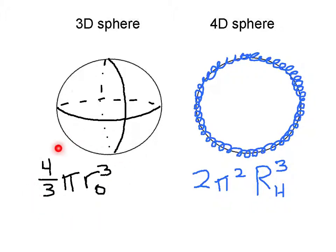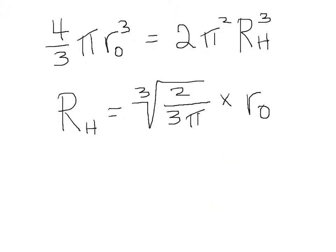3D sphere is given by this. The surface volume of 4D sphere is equal to that. We're going to set these two volumes equal and solve for the radius of the hyperverse. Doing the math tells us that the radius of the hyperverse is equal to the cube root of 2 over 3π times the radius of the observable universe.